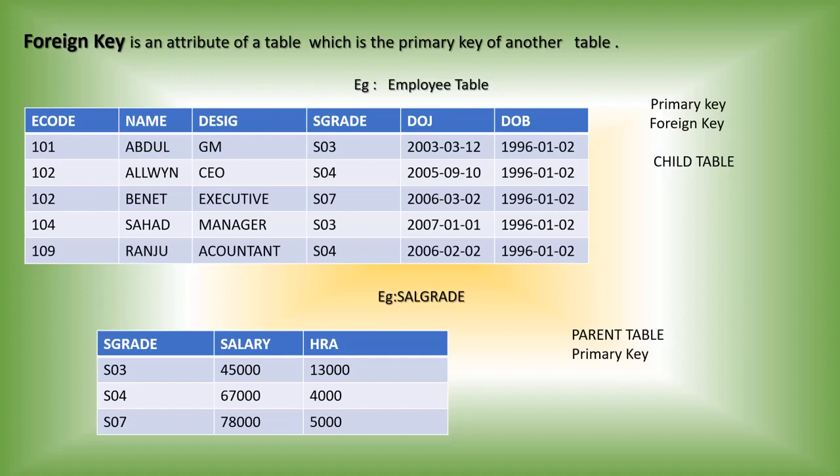Let's look at an example. In this example, employee table and salgrade table are two different tables. In the salgrade table, the columns are S grade, salary, and HRI. S grade means salary grade, and S grade is the primary key of the salgrade table. In the employee table, the columns are E code, name, designation, and S grade. That same S grade is appearing here in the employee table as well.